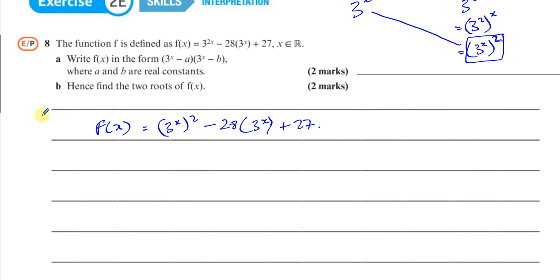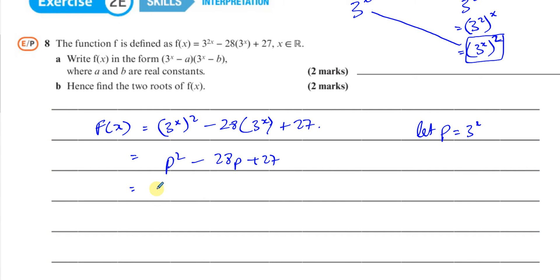If you want to, you can call 3 to the power of x a letter. For example, let p equal 3 to the power of x. In this case, this expression becomes p squared minus 28p plus 27. We can factorize this: we need two numbers that multiply to give us 27 and add to give us minus 28. Both have to be the same sign — both negative. Of course, it's 27 and 1: minus 27 times minus 1 is positive 27, and minus 27 plus minus 1 is minus 28.